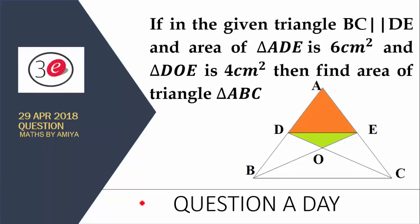Hi friends, it's Amyeh. Now it's time for a questioner day. Questioner day 29th April 2018: if in the given triangle BC is parallel to DE, and the area of ADE is 6 cm² and the area of DOE is 4 cm², then find the area of triangle ABC.